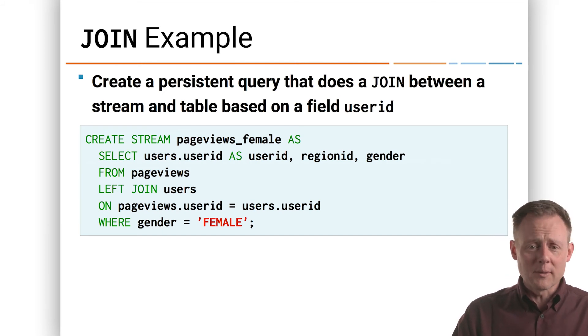But we're going to join. So from page views, left join users on page views user ID equals users user ID. That's a very unsurprising join condition. We're basically just saying, well, we've got a user ID in our page view stream.